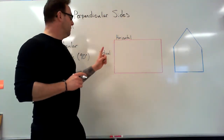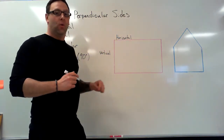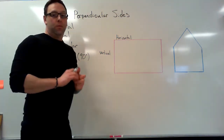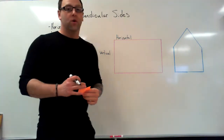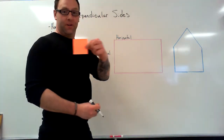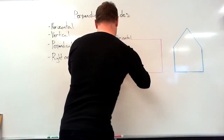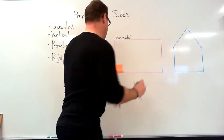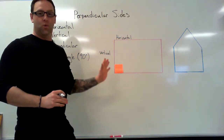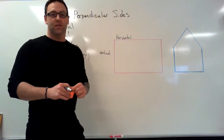Now, when a horizontal and vertical line intersect — that means meet at a corner — we call that perpendicular. Perpendicular corners are perfectly square corners. If we take a perfect square and put it in there, we can see that these two lines form a perfect square.